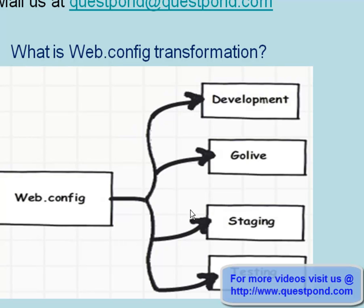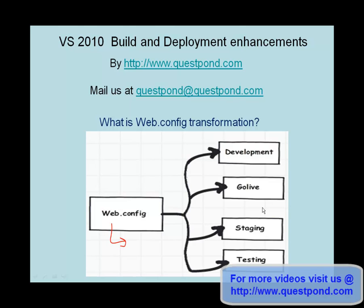There is one more issue we face as part of deployment, and that is web.config file versioning. When we talk about web.config, it has connection strings and configuration values which your application needs. Depending on the environment — development, go-live, or staging — the web.config values can change, which can be quite confusing if you have a large number of environments where you need to deploy web.config files with different values.